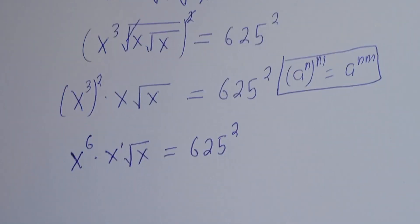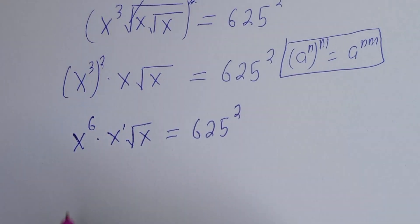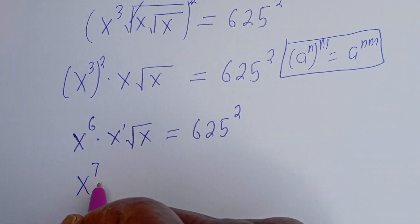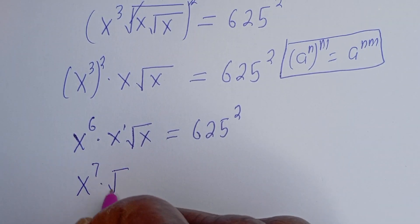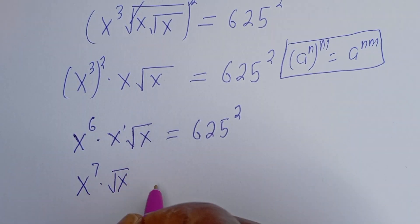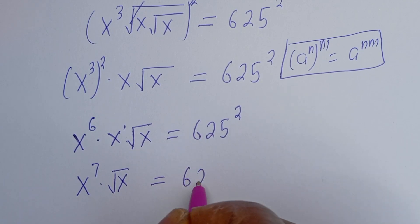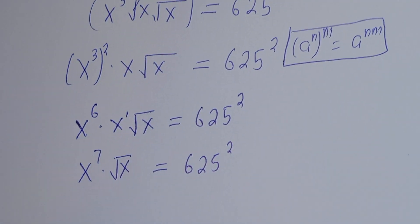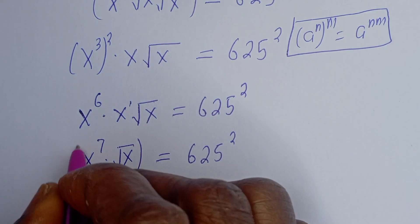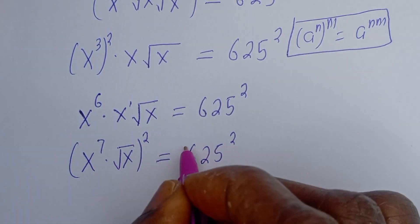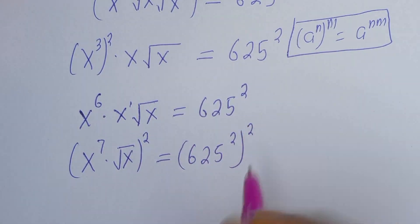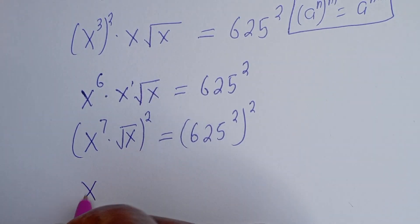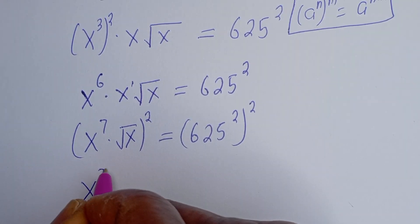This is to the power of 1. We have s to the power of 7 multiplied by square root of s is equal to 625 squared. Now let's square both sides of this equation again. Then this is s to the power of 7, squared, multiplied by — this will cancel this — s.